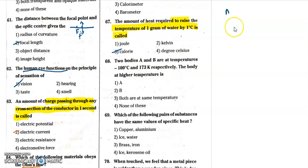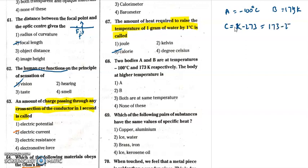A is minus 100 degrees Celsius. B is 173 Kelvin. To compare, we convert to the same system of units. We convert Kelvin to Celsius: K minus 273. So B body = 173 minus 273, which equals minus 100 degrees Celsius. Therefore A and B are at the same temperature.